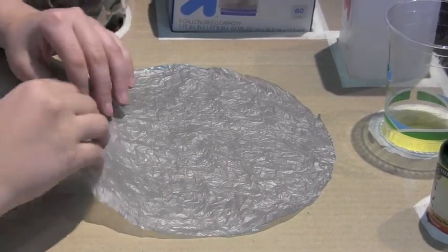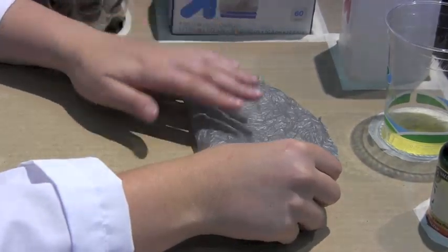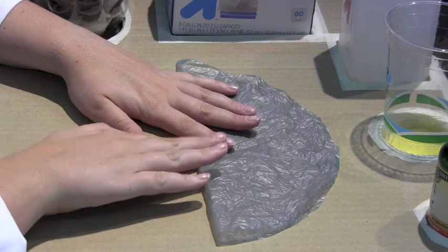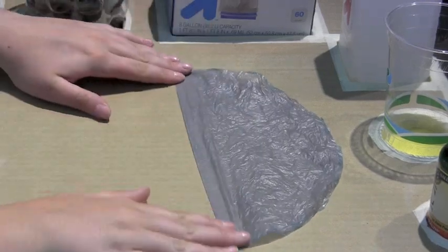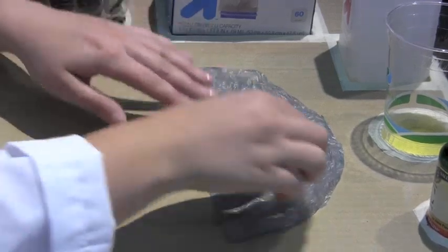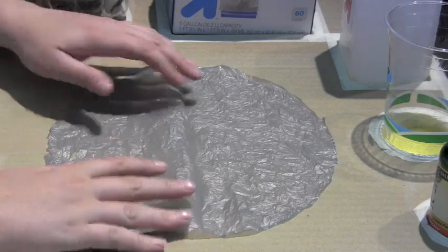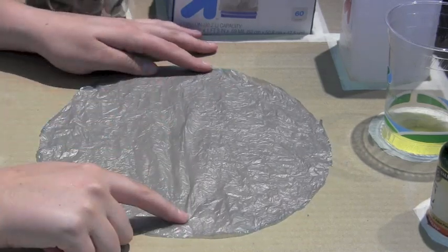Now that your parachute is smooth, fold it in half, creating a crease. Unfold your parachute, revealing the crease that you just made.